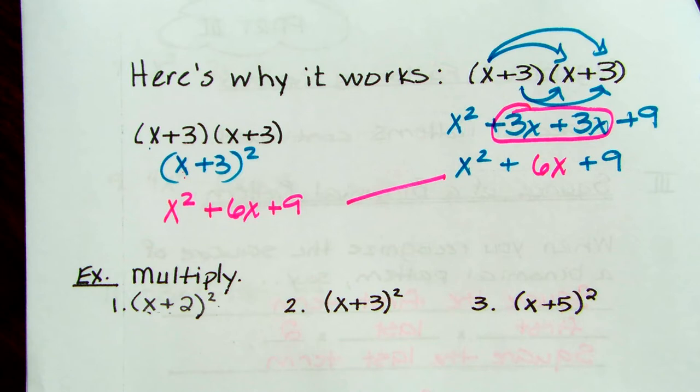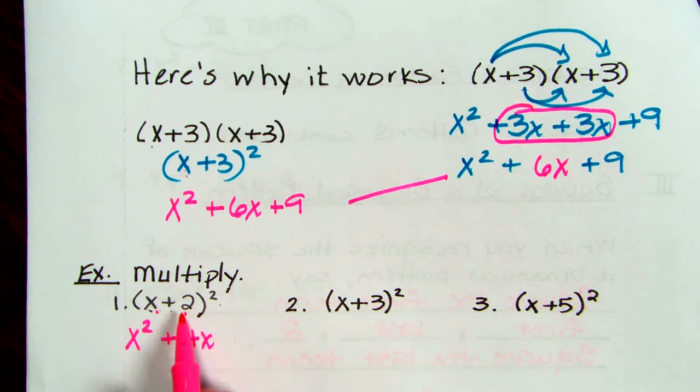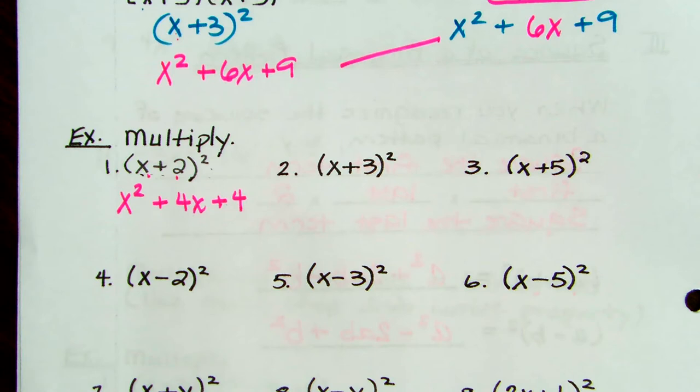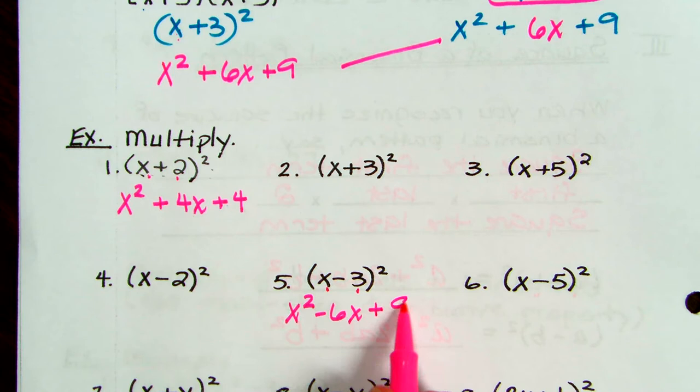Let's look at number 1: X plus 2 squared. Square the first, first times last times 2, then square the last term. If it's a minus sign, like number 5 — X minus 3 squared — you square the first: X squared. Then X times negative 3 times 2 is negative 6X. Square the last term gives positive 9.